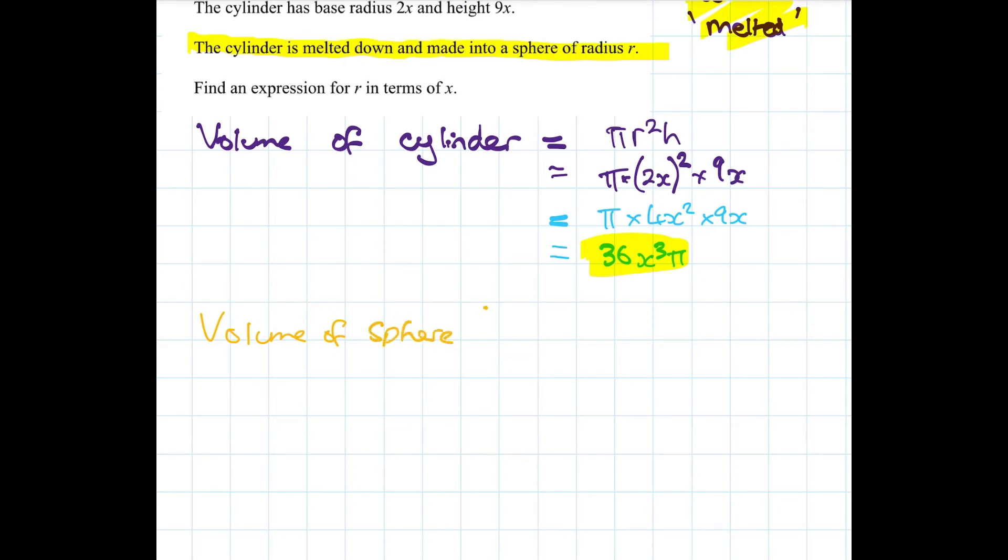So what's the volume of an arbitrary sphere of radius r? Well that's just 4/3πr³. And that's a very well known formula, it can be proved using calculus and maybe if you're interested I could do a video on that.